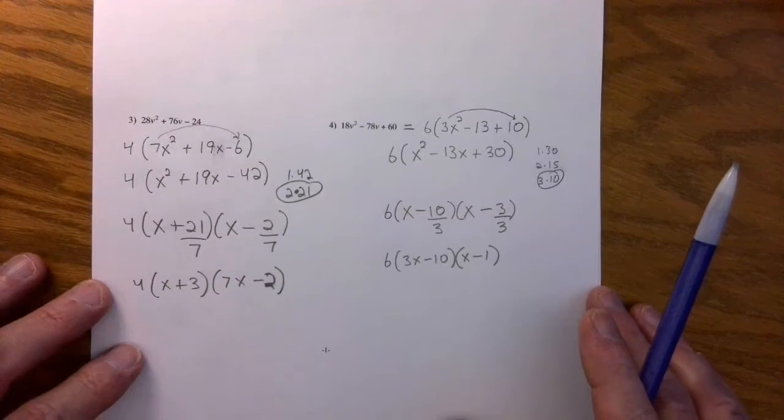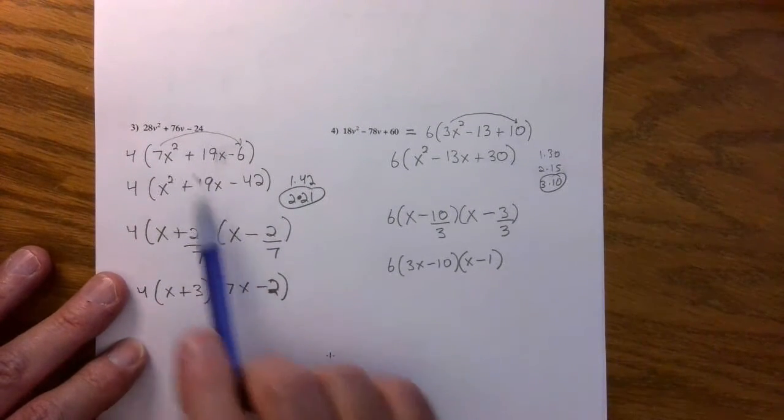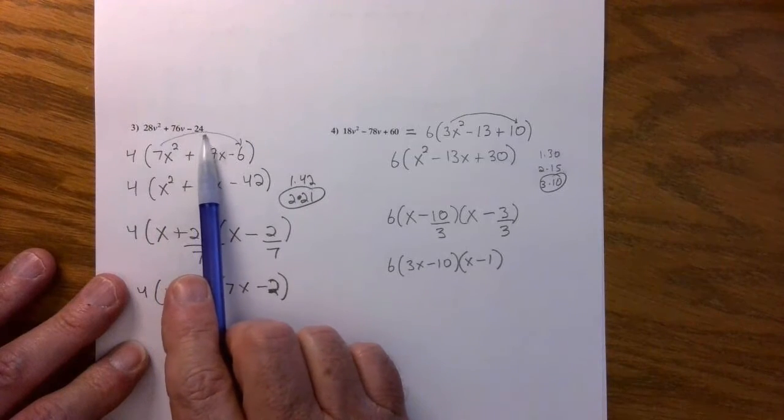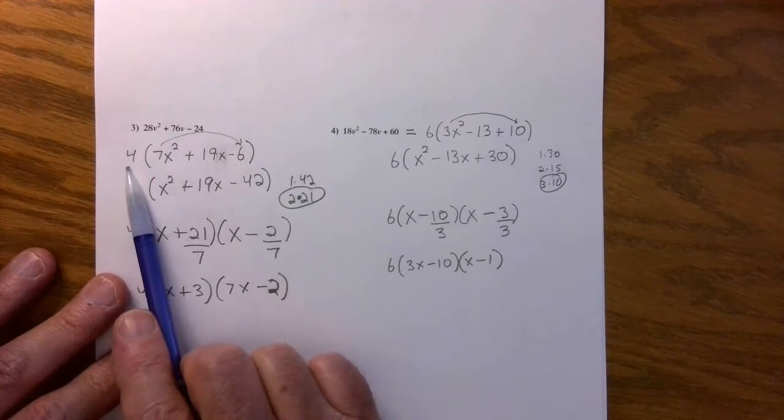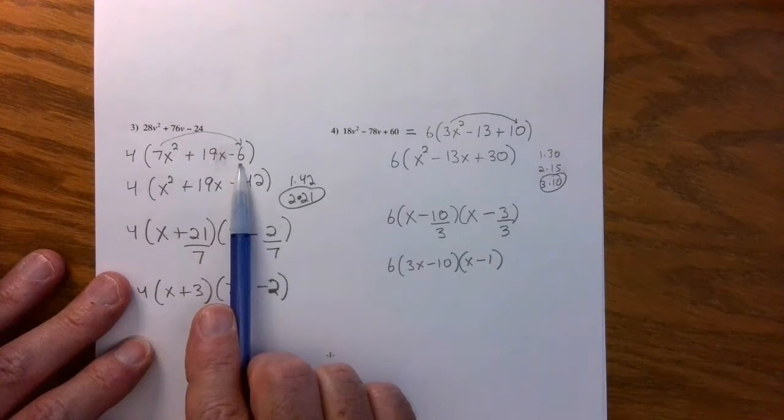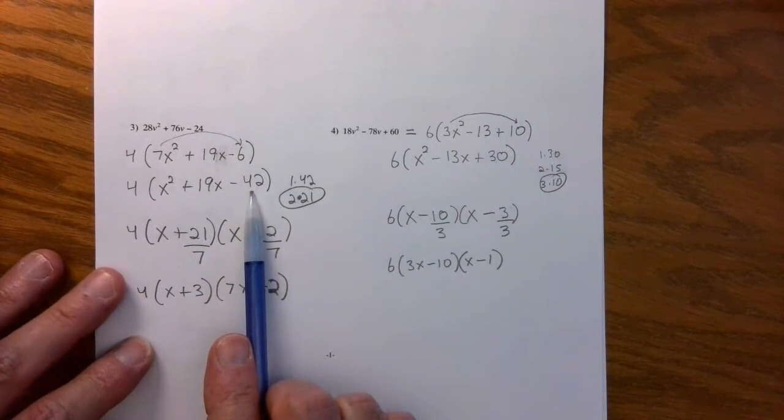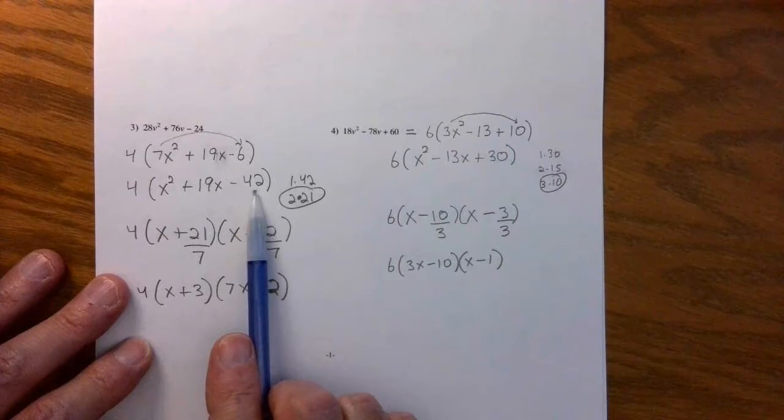Again, problems three and four might be the hardest ones on the test, you guys. This first one, you've got to factor out a greatest common factor of four. This is what you're left with. So you have to slide the seven back. Seven times six is forty-two.